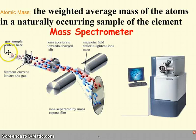A sample of the element enters into the mass spectrometer. The particles are separated by mass, and then the calculation can take place.